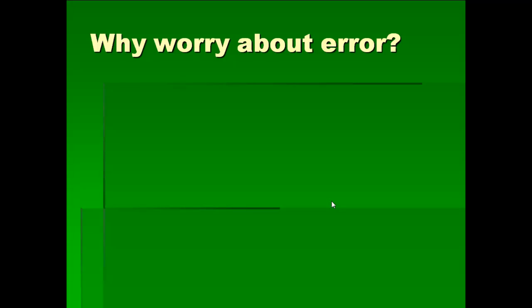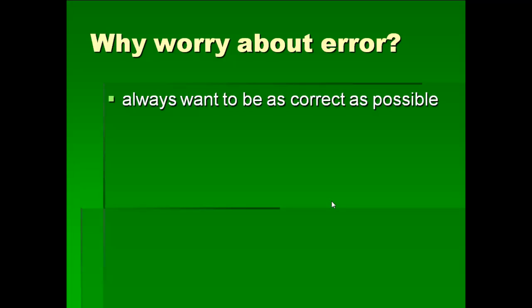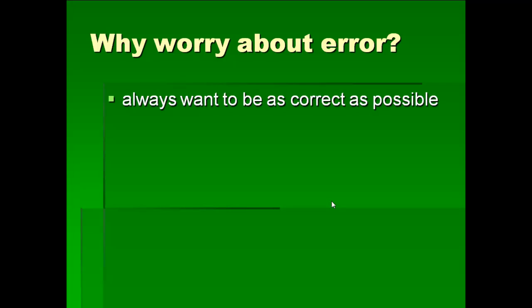Why worry about it? We're always worried about error — we're scientists. We know there's experimental error, random error, and error that comes into any of the measurements we take. Specifically with aging, we always want to be as correct and accurate as possible. Why do we care so much with aging fish? One big reason is that a lot of the modeling we do nowadays requires valid ages. If you wanted to model fish growth or model a potential new regulation, you need to know things like the growth rate and mortality rate — all those things depend upon accurate ages.